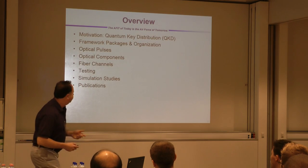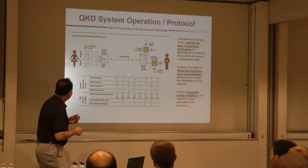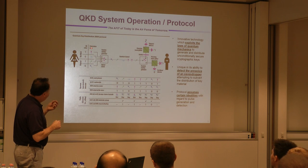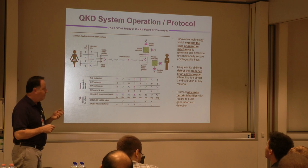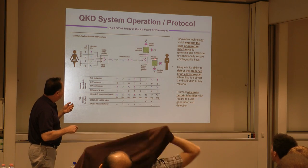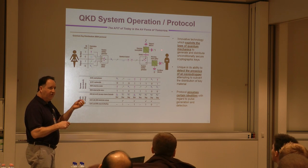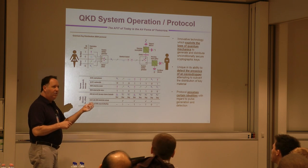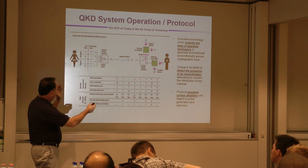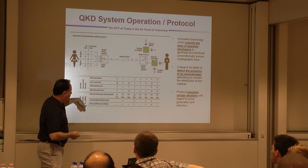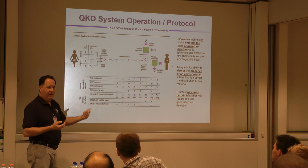At a high level, it kind of looks like this. Alice creates photons, polarizes them in certain states — certain what's called bases — transmits across a quantum channel. On the Bob side, photons go through optical components to try to decipher how they are polarized. Given how Bob thinks they're polarized, they have a protocol where they talk to each other and explain how to reconcile a given key.